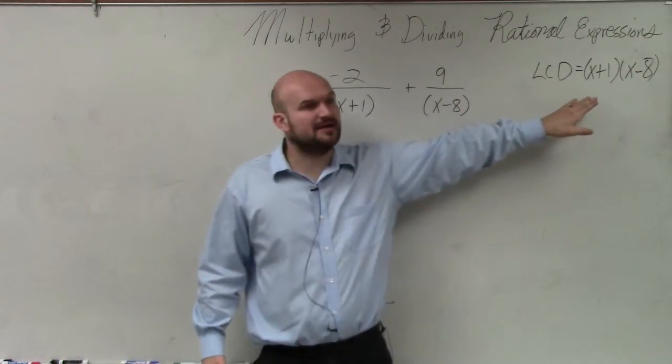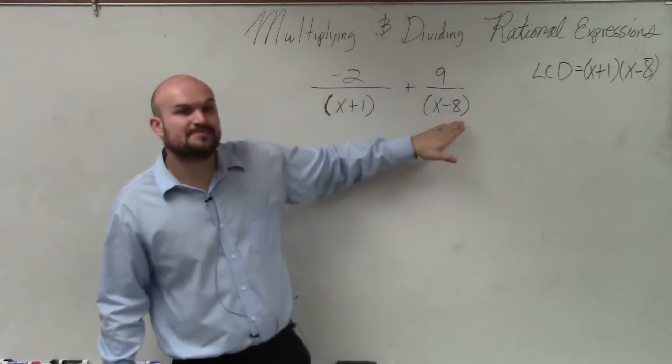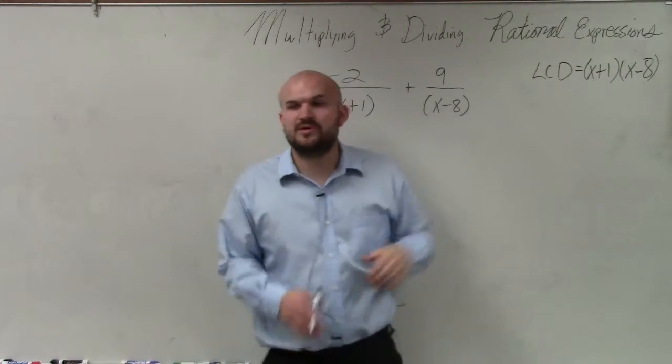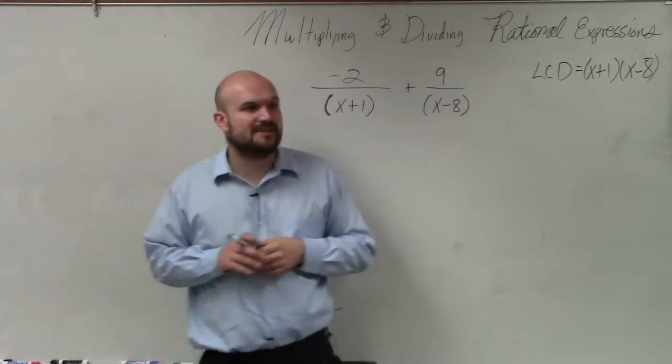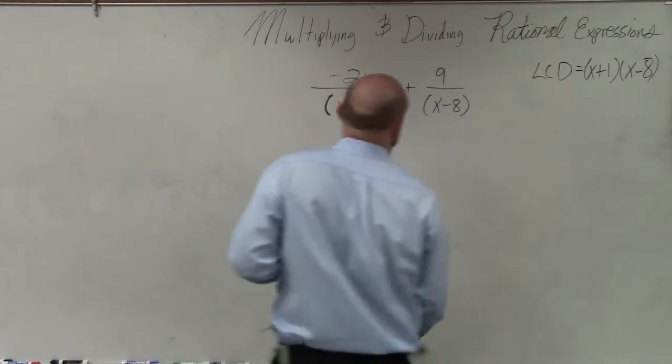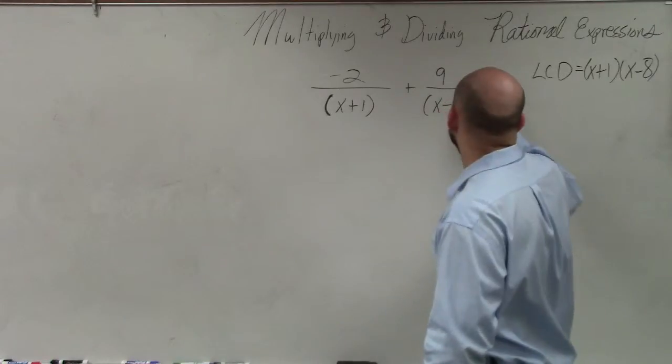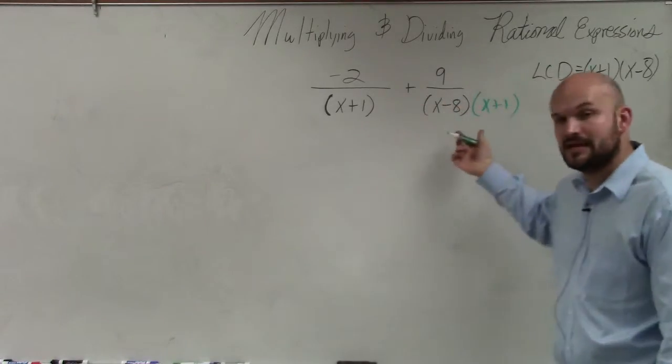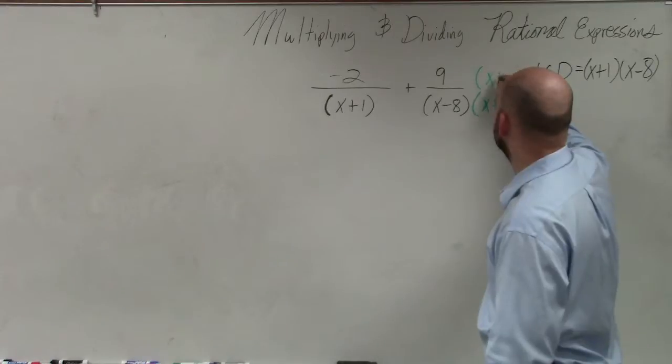So if here's my LCD, now I need to determine, how do I get x minus 8 to be x plus 1 times x minus 8? What would I need to multiply x minus 8 by? x plus 1. And whatever I do in the denominator, I have to do in the numerator.